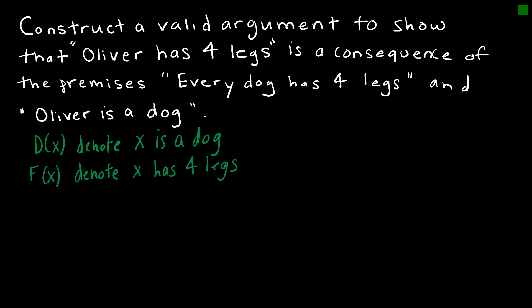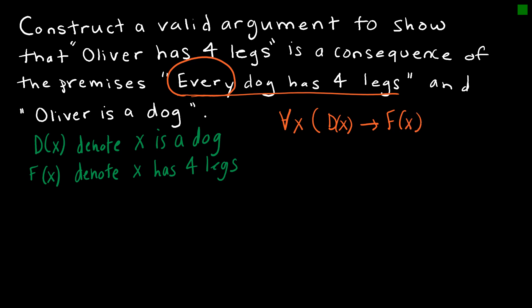Now that I have my predicates, I want to write my premises using those predicates. 'Every dog has four legs' can be written as: for all x in the domain, if D(x) then F(x) — if it is a dog, then it has four legs. My other premise, 'Oliver is a dog,' I'll write as D(O), where O is for Oliver, meaning Oliver is a dog. So these are my two premises.